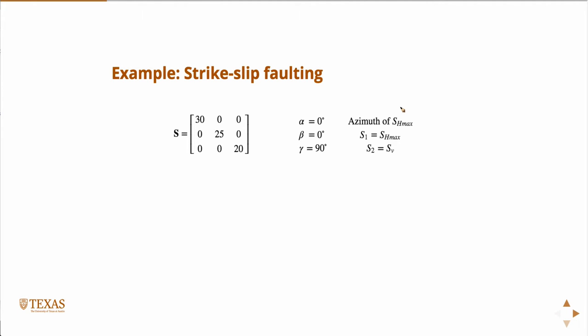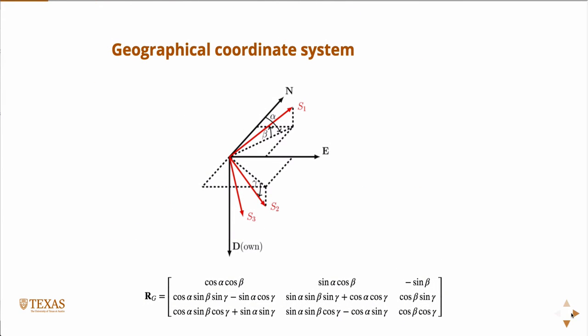Let's work an example. Your angles are 0, 0, 90. I'm going to go back a couple slides so you can plug them in. Alpha is 0, beta is 0, gamma is 90 degrees.